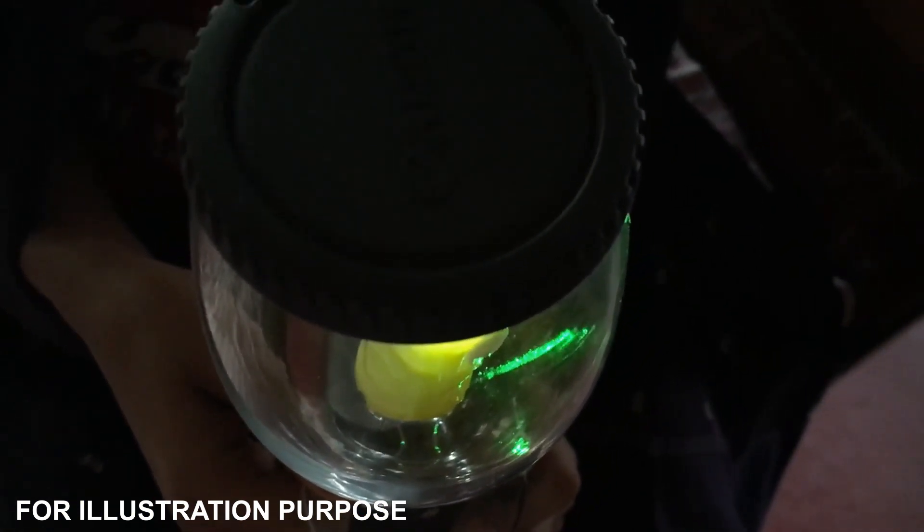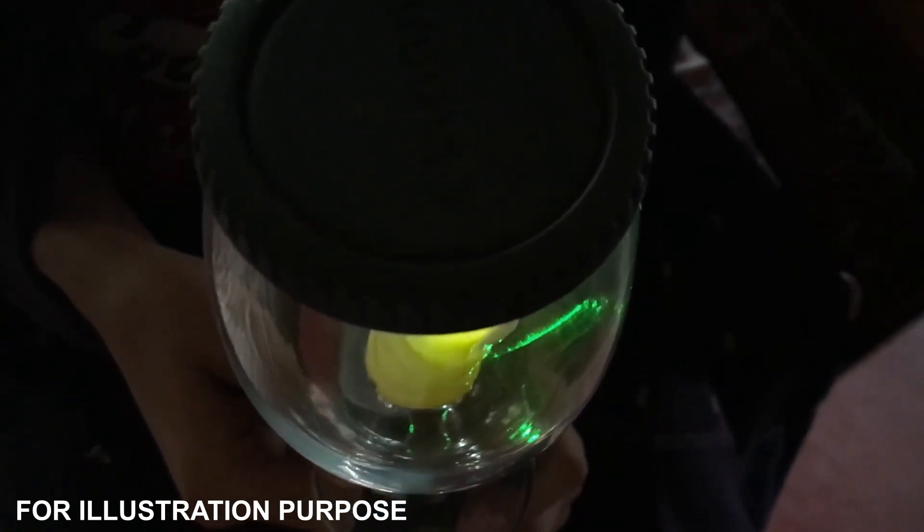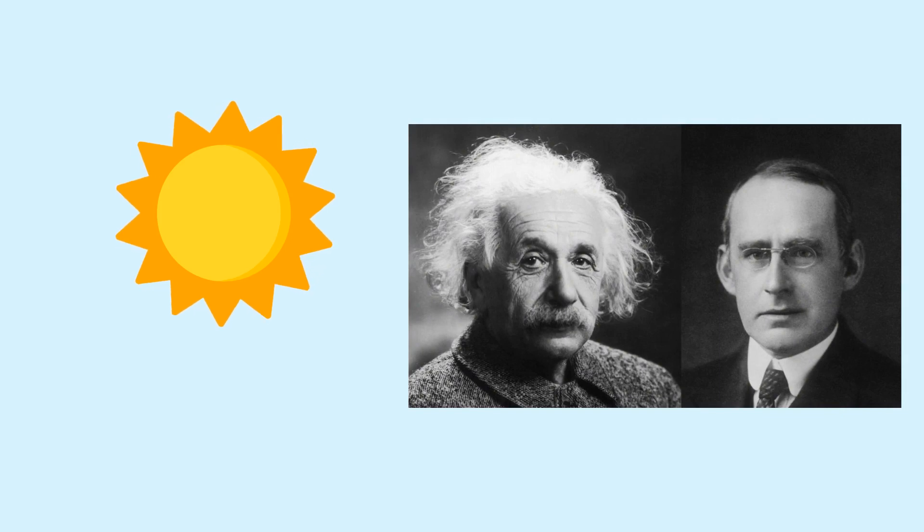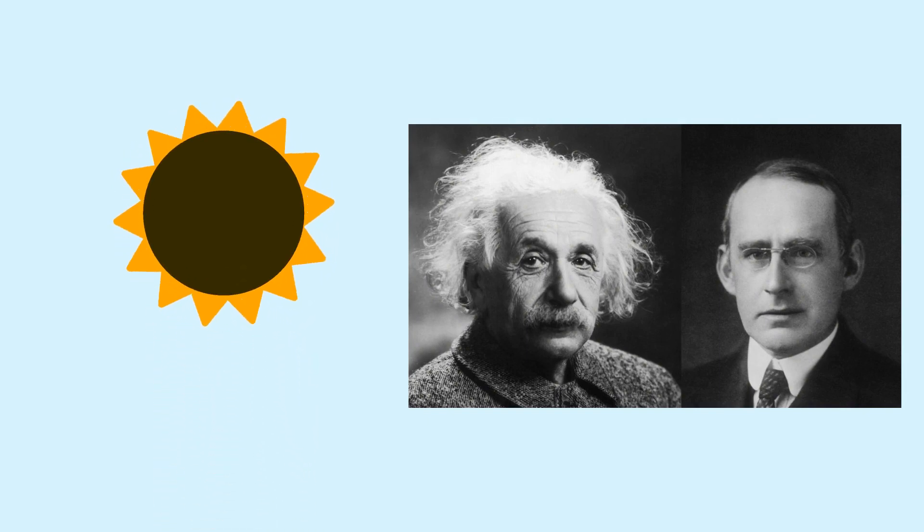Sir Eddington had to wait. Usually the Sun's light blocks the light from stars, but during the total solar eclipse, the Moon blocked the Sun and the stars behind became quite visible. Sir Arthur Eddington measured the effect.